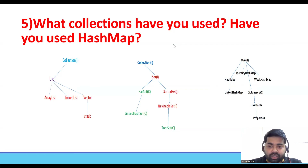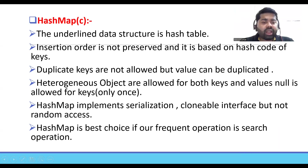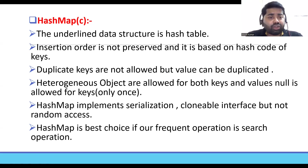For HashMap: the underlying data structure is a hash table. Insertion order is not preserved — it is based on the hash code of keys. Duplicate keys are not allowed, but values can be duplicated. Heterogeneous objects are allowed for both key and value. Null is allowed only once. HashMap is the best choice when the frequent operation is a search operation. We use HashMap in many places, for example when developing a library for Excel — it depends on the requirement.